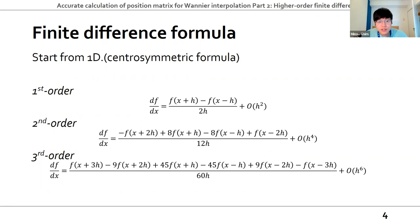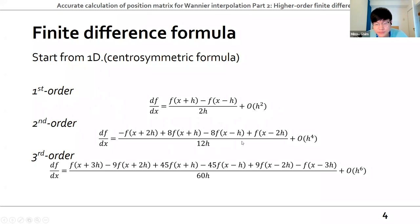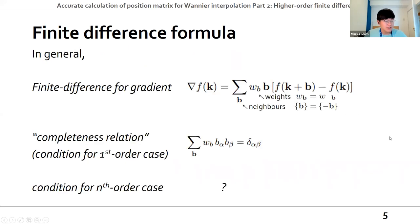We are assuming that we are using a centrally symmetric formula for finite difference. For example, the first-order formula has two neighbors, minus H and plus H, with the error proportional to H squared. The second order has four neighbors with the error proportional to H to the four. In this manner, we can extend to the Nth order and find the coefficients and error dependence.